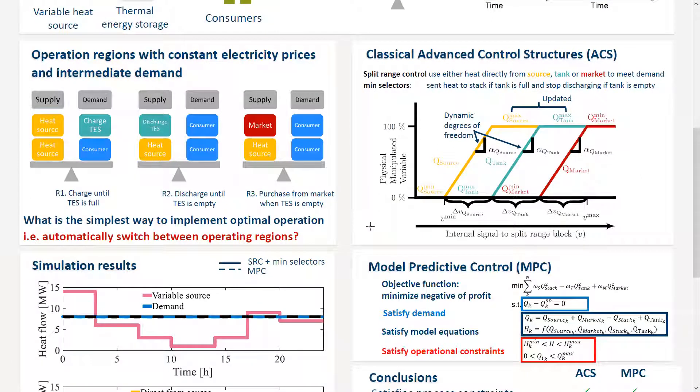What is important here to notice is that source and the tank have a variable availability and therefore, they are dynamic degree of freedom.